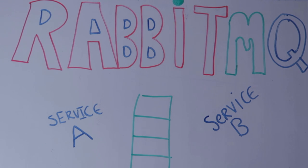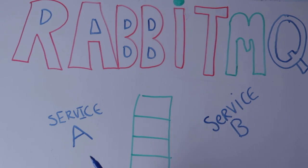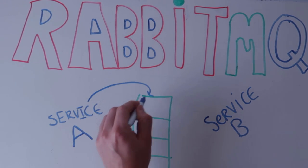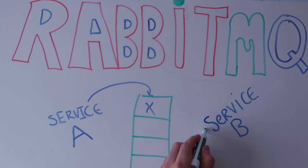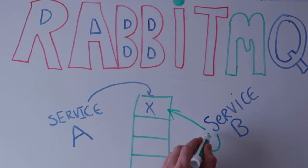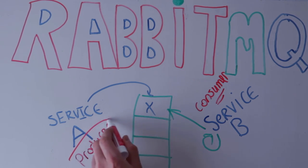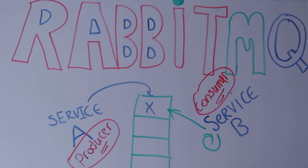Asynchronous messaging is usually achieved using a message queue, and this is where RabbitMQ comes in. Instead of service A directly calling service B, service A places a message into the queue, then continues with its life without worrying about who processes it. Service B picks up that message and processes it. In message queuing, service A is called the producer since it produces messages, and service B is called the consumer since it consumes messages.